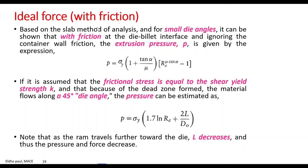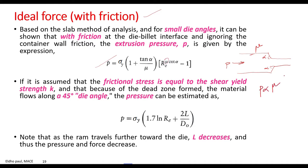The next case is ideal force with friction. Here we have a die container, and we apply pressure or force in this direction. This is the die angle alpha. The material has to divide the flow according to angle alpha, and there will be friction between the workpiece and container, represented by mu. We consider mu because this is the ideal force with friction case.